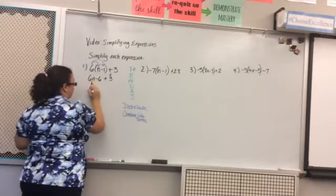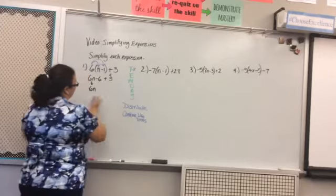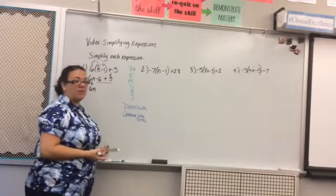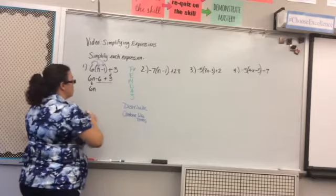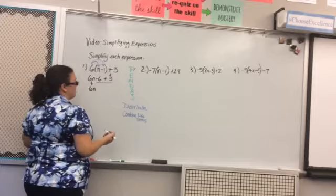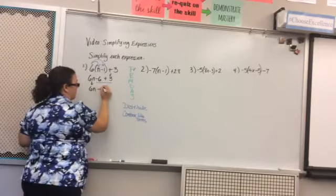But when I look at the last two terms I have a negative six plus three. Those are just numbers. They don't have a variable at all. I'm going to put them together by doing whatever operation I see left to right. So negative six plus three means I'm going to add the two together. Negative six add three is going to be negative three so I'm just going to put a minus three here.